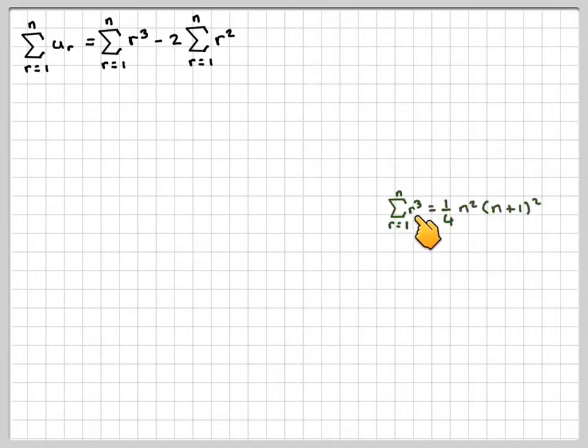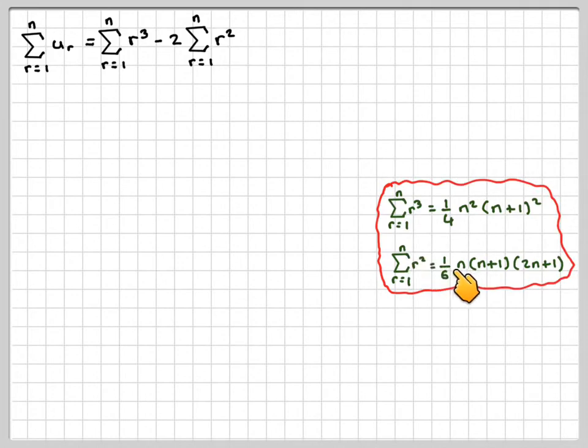Right, writing that out again. And now we need to use some standard results. So the sum of the cubes from r equals 1 to n is 1 quarter n squared times (n plus 1) squared. Again, this will be proved later in a later video. And then sigma r squared from r equals 1 to n is 1 sixth n(n plus 1)(2n plus 1). That was introduced in the previous video.